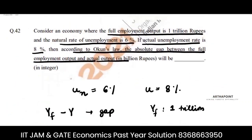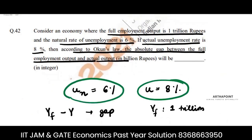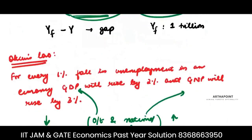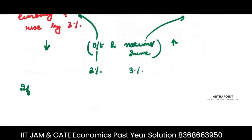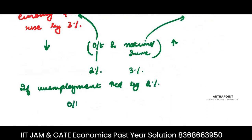Now let's go to the question. Here, the actual unemployment rate is 8% and the natural rate is 6%, which means unemployment has increased from the natural rate by 2%. So if unemployment has increased by 2%, output will decrease by how much? It will decrease by 4%.